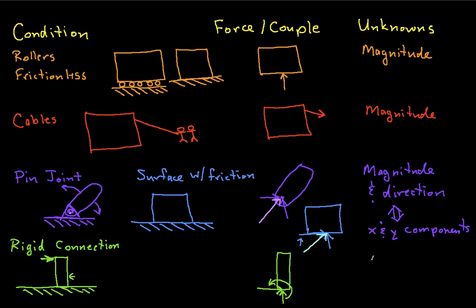So in this case, the unknowns are the magnitude and direction, or the x and y components, plus the magnitude of the couple. So the idea here again is that if you have a rigid connection, you'll have an x and a y component of a force. And if you want to, you can represent this as a single vector with an unknown magnitude and an unknown direction. But then you'll also have a couple.